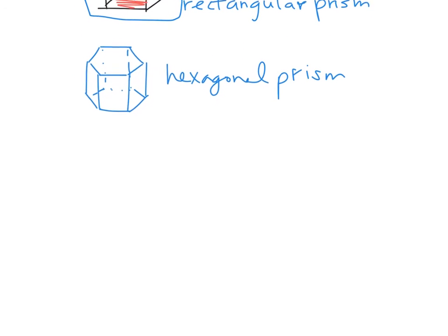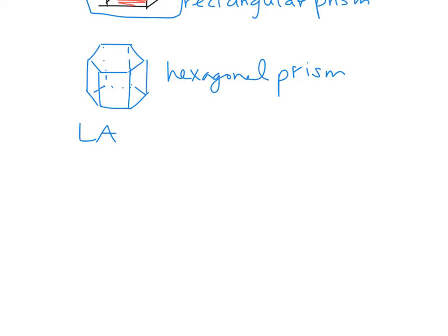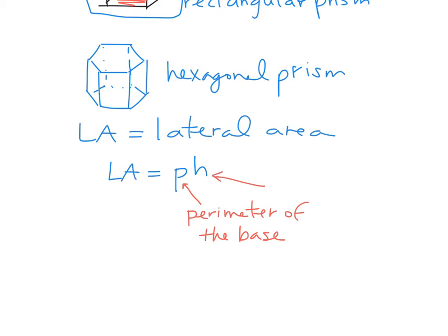So here are your formulas. And I'm going to show you a couple examples of how to use them. LA is going to stand for lateral area. So the formula is going to be the lateral area equals P times H. But you have to know what P and H stand for here. So P is the perimeter of the base and H is the height of the figure.